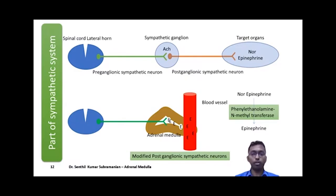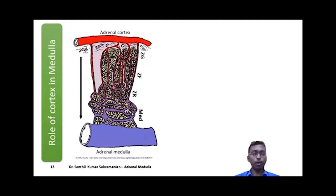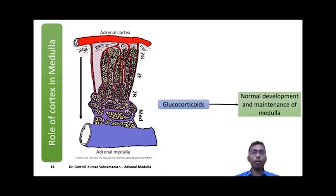For this conversion, it requires the presence of high levels of cortisol. This is achieved through the unique blood supply in the adrenal glands. Blood enters the adrenal cortex, traverses it, and then reaches the adrenal medulla. Hence, the blood reaching the adrenal medulla is rich with cortisol secreted from the adrenal cortex. The presence of cortisol or glucocorticoids is considered essential for the normal development and maintenance of the medulla.